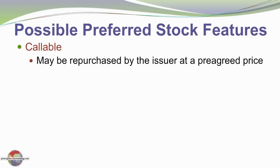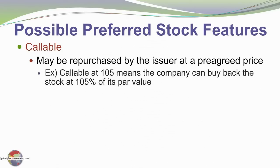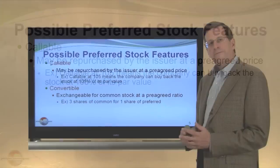Preferred stock may be callable. That is, the company may reserve the right to repurchase it at a prearranged price within some particular time window. For example, callable at 105 means the company could buy back its preferred stock at 105% of its par value.